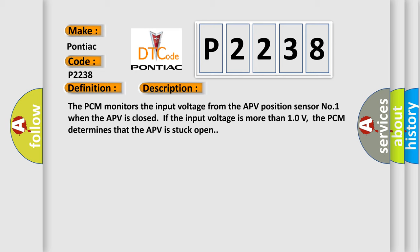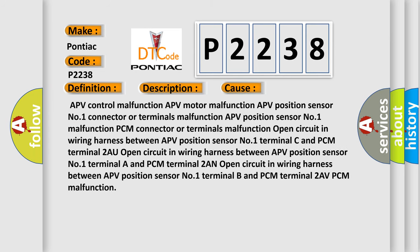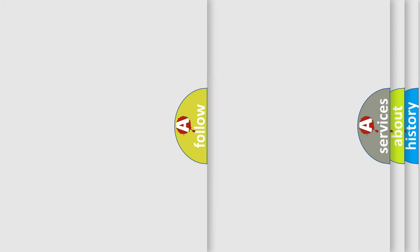This diagnostic error occurs most often in these cases: APV control malfunction, APV motor malfunction, APV position sensor number one connector or terminals malfunction, APV position sensor number one malfunction, PCM connector or terminals malfunction, open circuit in wiring harness between APV position sensor number one terminal C and PCM terminal, open circuit in wiring harness between APV position sensor number one terminal A and PCM terminal, open circuit in wiring harness between APV position sensor number one terminal B and PCM terminal, or PCM malfunction.